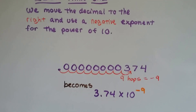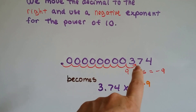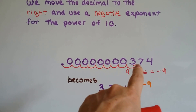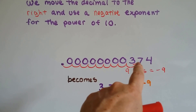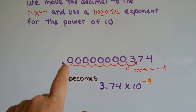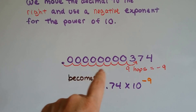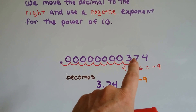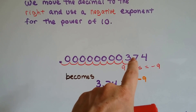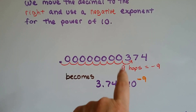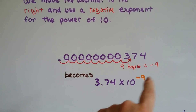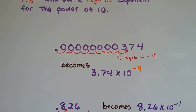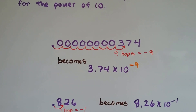Look at this one. We can move this decimal in between the three and the seven, so we've got our one digit in front of the decimal point. Nine hops to get that decimal point there between the three and the seven. That nine hops means we're going to have a negative nine for an exponent for our power of ten. It becomes 3.74 times ten to the negative ninth.